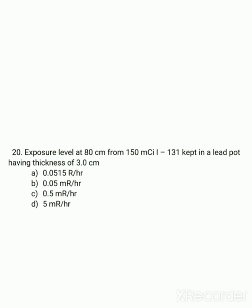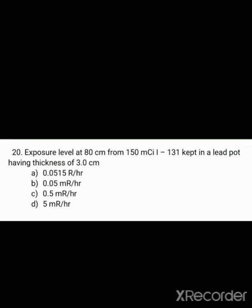We need to calculate the exposure level at 80 cm from 150 millicurie Iodine-131 kept in a lead pod of 3 cm thickness. Using the intensity formula: Intensity = (Activity × specific gamma ray constant) / distance², we can calculate the exact answer, which is 0.0515 roentgen per hour — that is option A. Thank you so much, I hope you will learn a lot from this presentation.